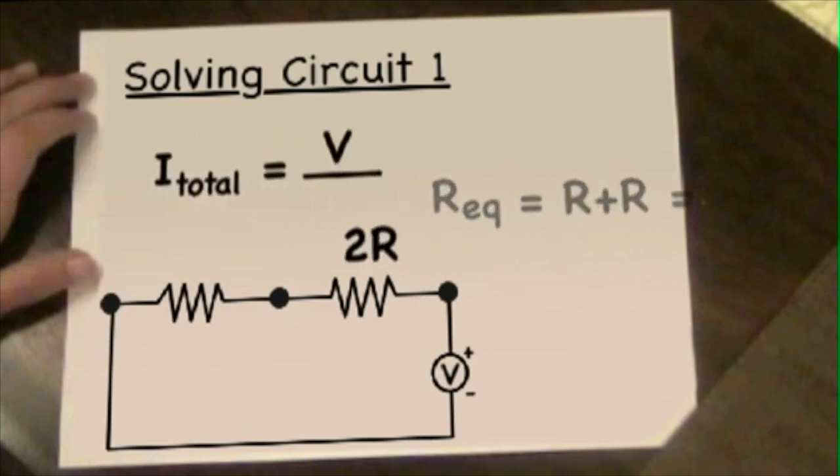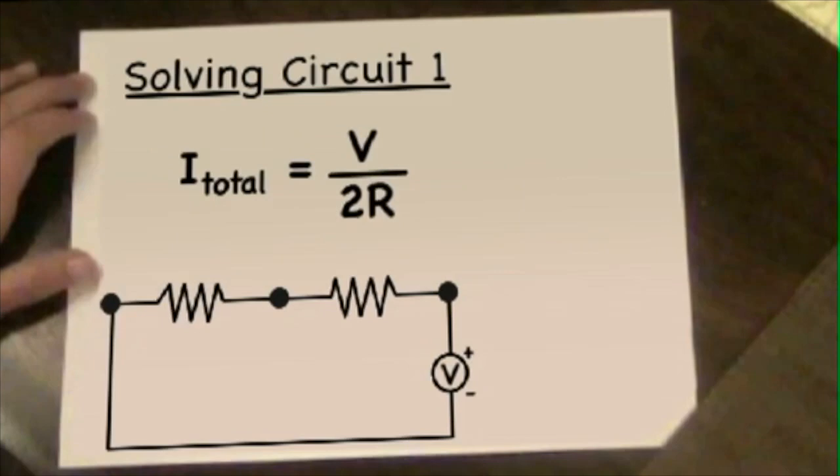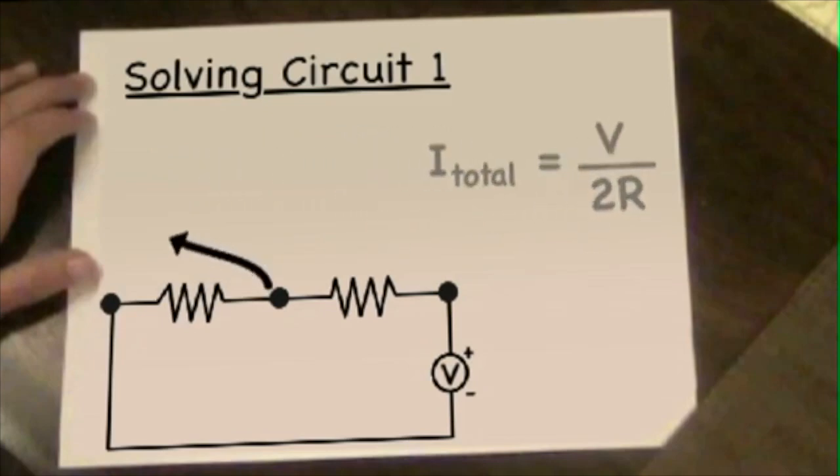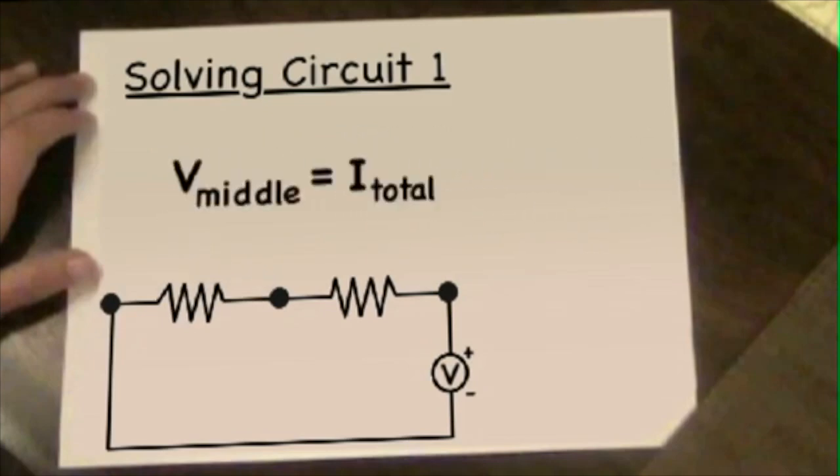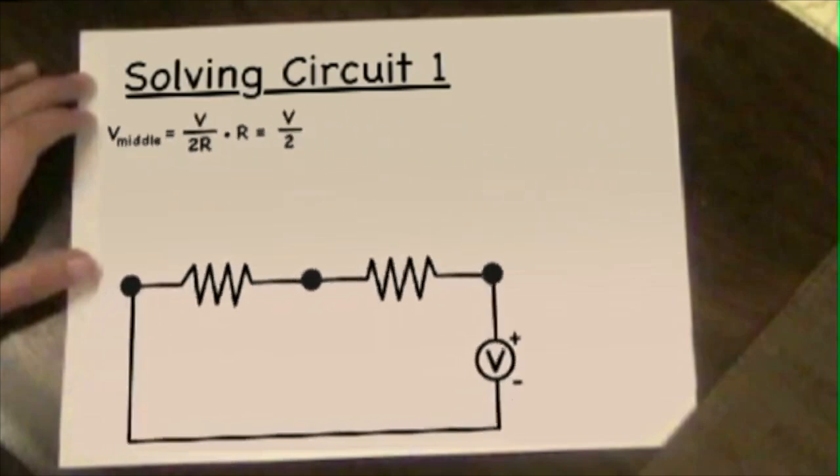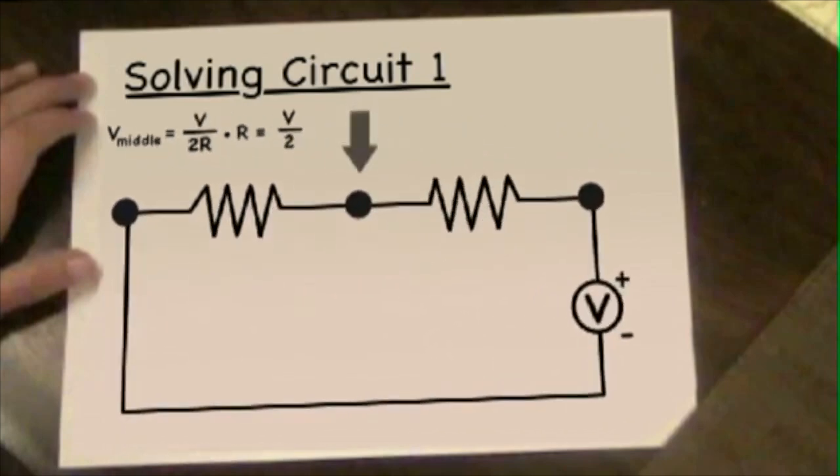I total can be written as V divided by 2R then. We can now solve for V middle which equals I total times R. Since we just solved for I total we can plug that into the equation and we get V middle equals V divided by 2R times R which equals V over 2. This means that we'd expect the water height at the middle of the circuit to equal half of the total water height of the pressure source on the right. From the experiment we find a very similar result.